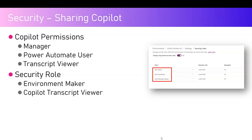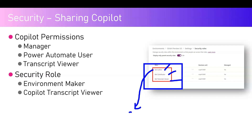As you can see on screen, there are three security roles available out of the box, and you can create another security role depending on your organization's need. The three roles are: bot author, bot contributor, and bot transcript viewer. Bot author is for someone who wants to create a copilot or a bot.